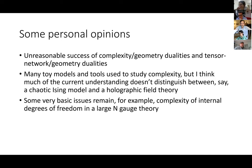We have a lot of toy models, tensor network models, for thinking about complexity. But as I emphasized, a lot of this does not distinguish between, say, a chaotic Ising model and a holographic field theory. That's both a triumph and an opportunity — it's great that this single picture can encompass so many different physical systems, that's wonderful unity in physics. But it does suggest that we can ask more refined questions and learn more about what distinguishes these different things from a complexity point of view.